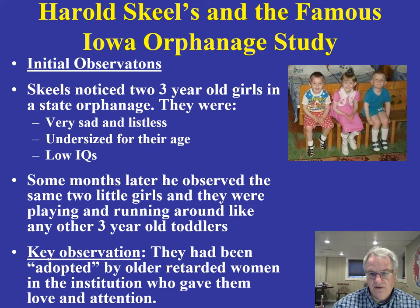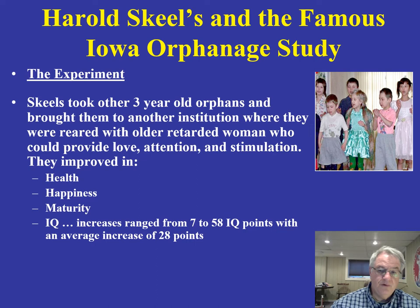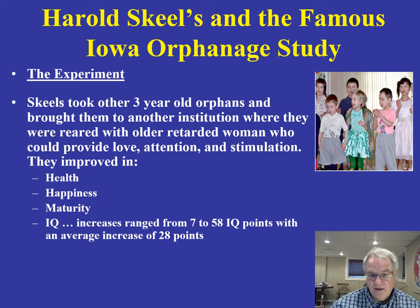Staff members informed him that the girls had been adopted by older intellectually disabled women in that institution, who gave them a lot of love and attention. This suggested a very interesting experiment. He took other three-year-old orphans and placed them with those older women who gave them support, attention, and stimulation. He found improvements in their health, happiness, and most of all their IQ — increases ranged from 7 to 58 IQ points, with an average increase of about 28 points.